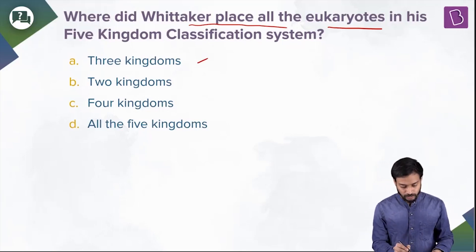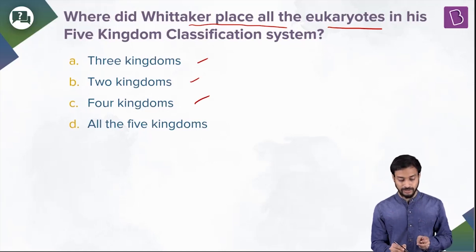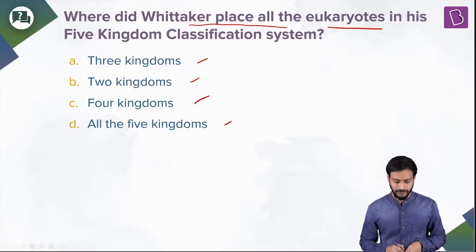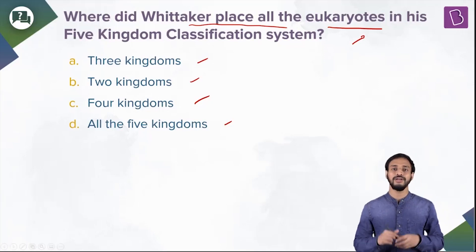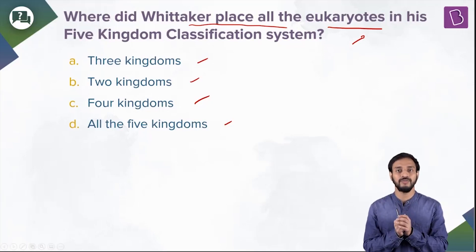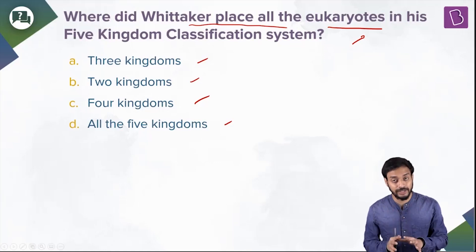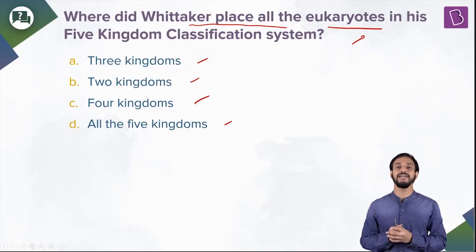The options are: five kingdoms, two kingdoms, three kingdoms, four kingdoms, or all five kingdoms. Recall the five kingdom system of classification proposed by R.H. Whittaker.